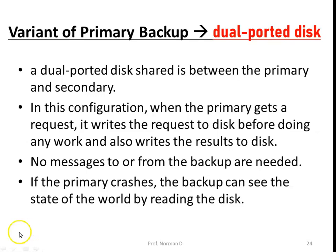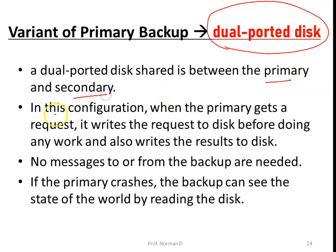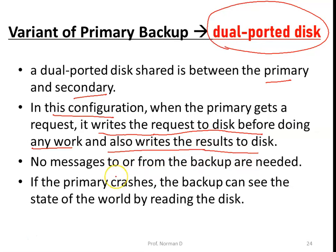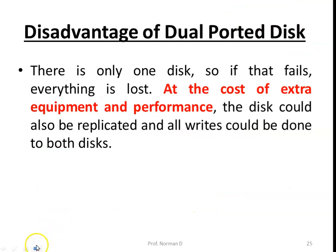A variant of primary backup uses a dual-ported disk shared between the primary and the secondary. When the primary gets a request, it writes the request to the disk before doing any work, and also writes the results to the disk. No messages to or from the backup are needed. If the primary crashes, the backup can read the disk to see the state of the work. The downside is there is only one disk, so if that disk also fails everything is lost. At the cost of extra equipment and performance, the disk could also be replicated with all writes done to both disks.